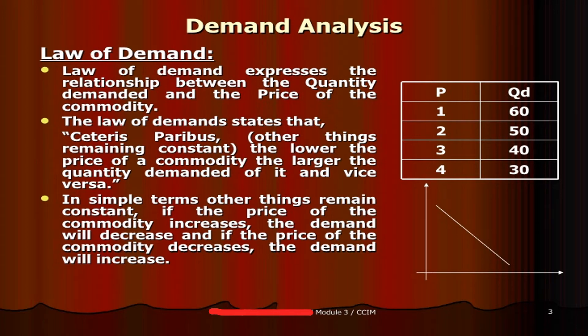We already know about what demand is and its determinants. Now let us understand the law of demand. Law means certain rules and regulations. The law of demand expresses the relationship between quantity demanded and the price of the commodity — it is the relationship between demand and price. The law of demand states that: